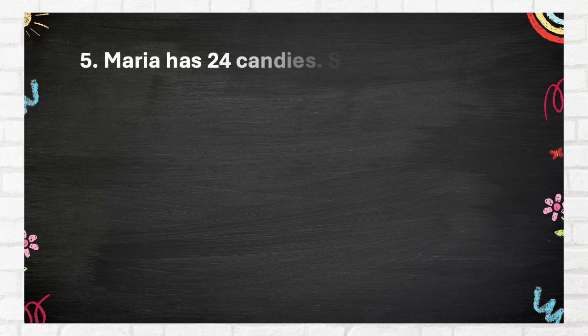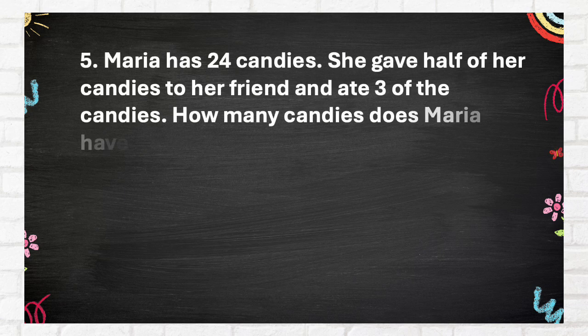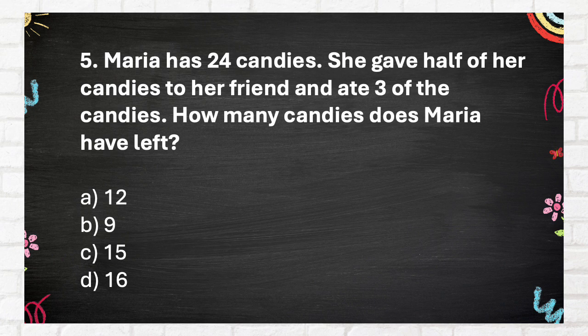Question number 5. Maria has 24 candies. She gave half of her candies to her friend and ate 3 of the candies. How many candies does Maria have left? A 12, B 9, C 15, D 16.